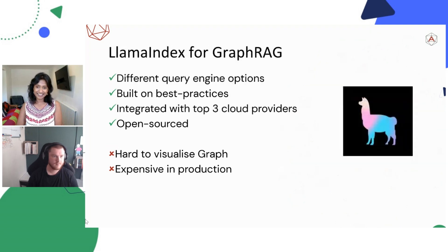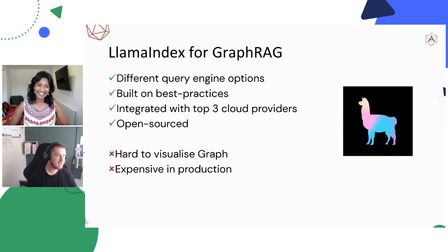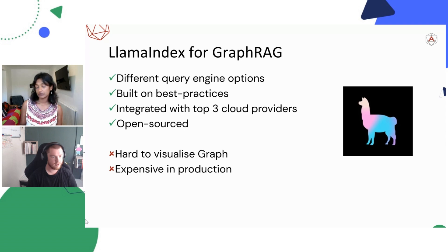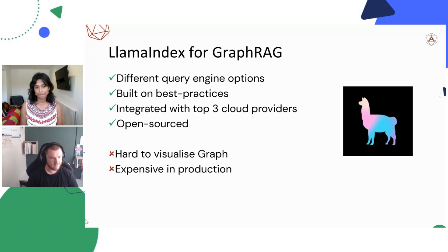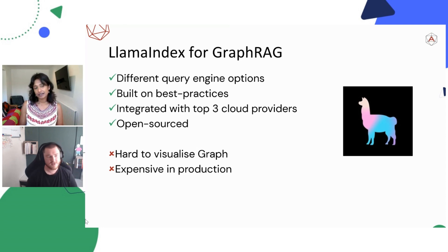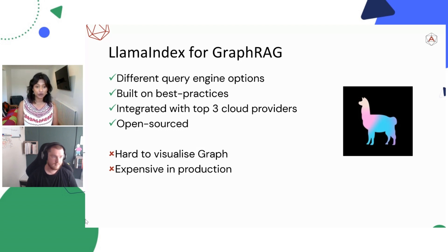Moving on to LlamaIndex. LlamaIndex has a little bit more nuance with the querying engine — you can do it through Cypher or natural language, which gives you a couple of different options. It's built on best practices, but remember to keep those best practices in place in your code. It integrates with the top three cloud providers, so you can spin it up in any serverless environment. Open source — always a winner. Hard to visualize, but not as much as Microsoft GraphRAG, and I've seen a recent implementation of LlamaIndex and Neo4j that may make visualization a lot easier.